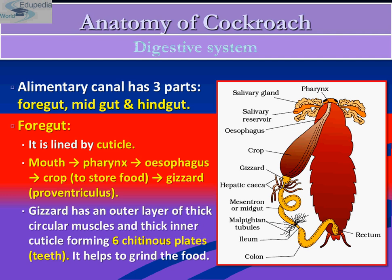The hemocele consists of a large number of fat bodies, which are fat cells containing fat globules, protein granules, and glycogen — forming a storage structure. From here, nutrients are transported to different body parts. Just after the midgut is the hindgut. In the hindgut, absorption of water takes place, and the undigested food is formed into almost dry pellets, which are excreted through the anus as feces.